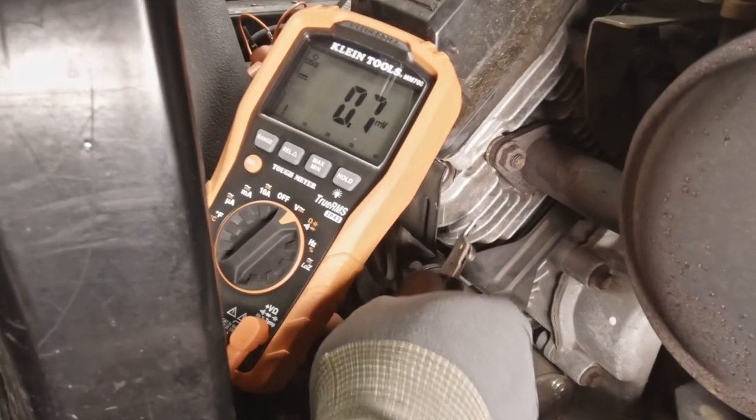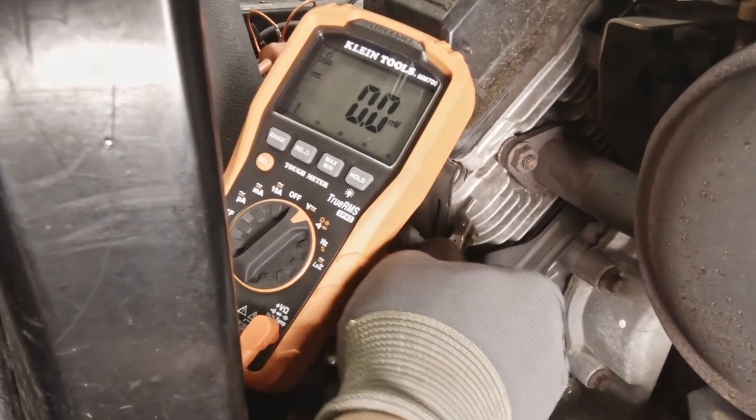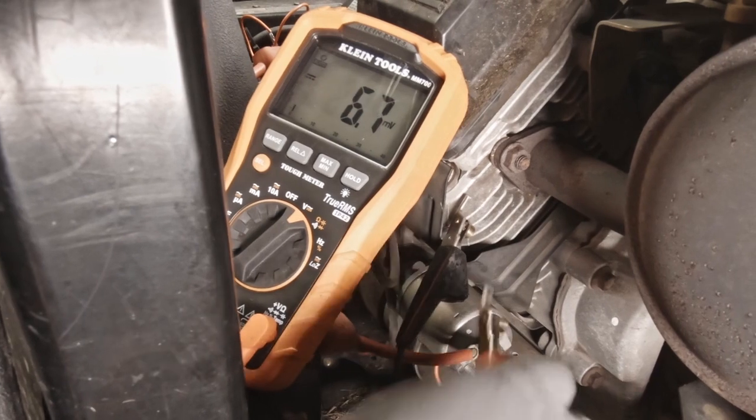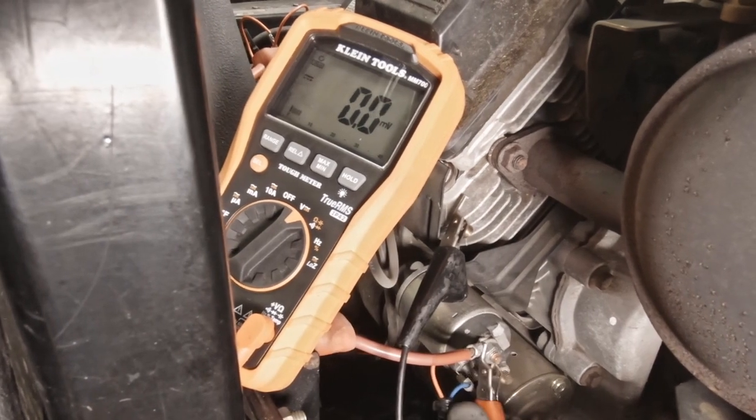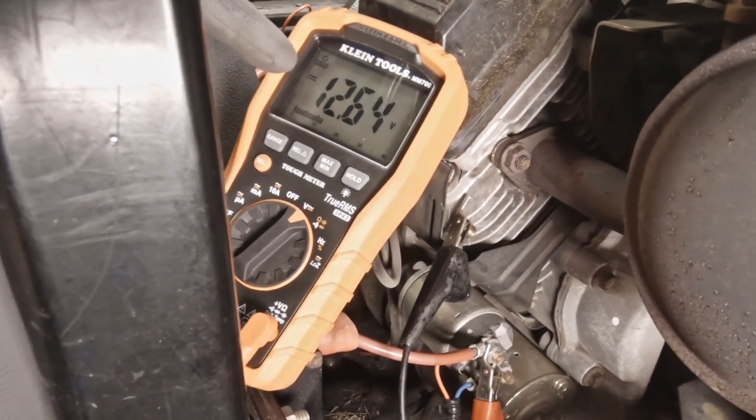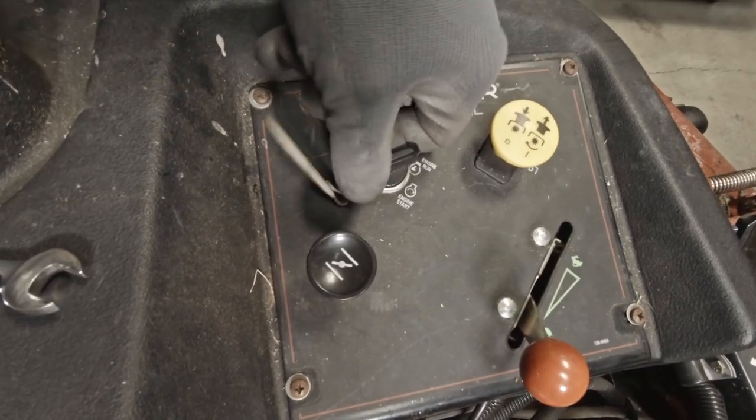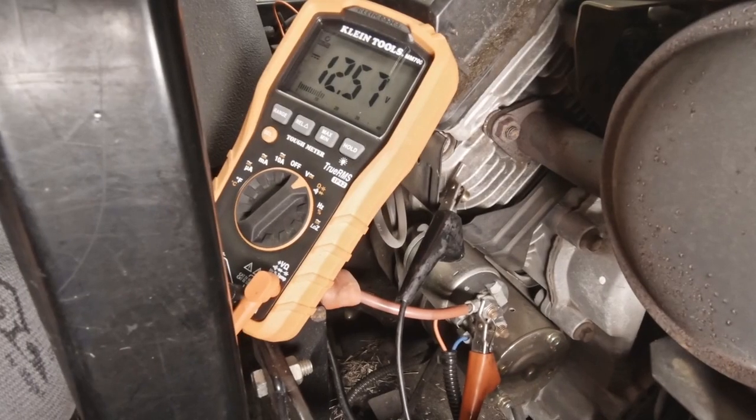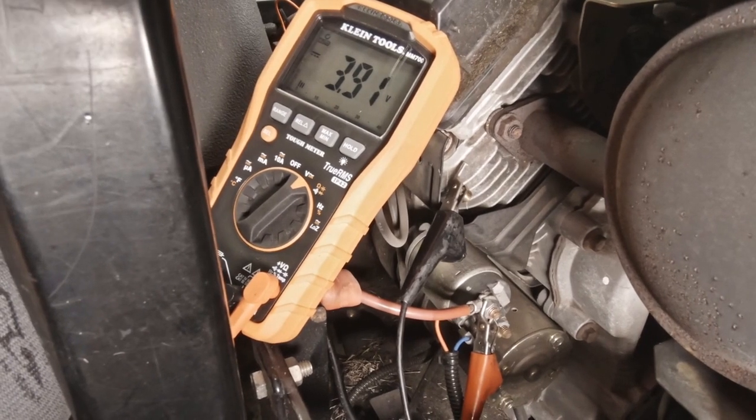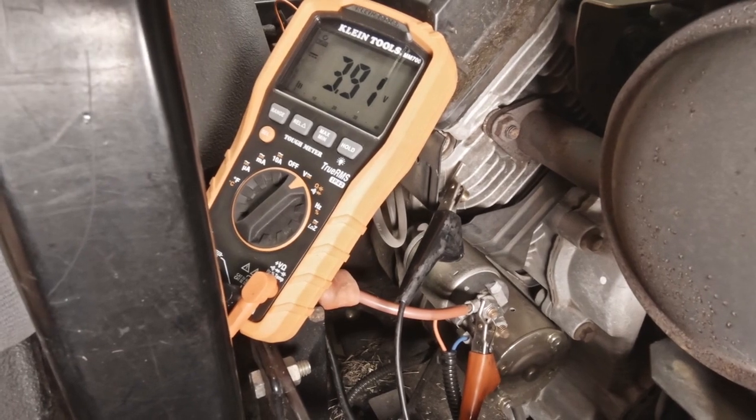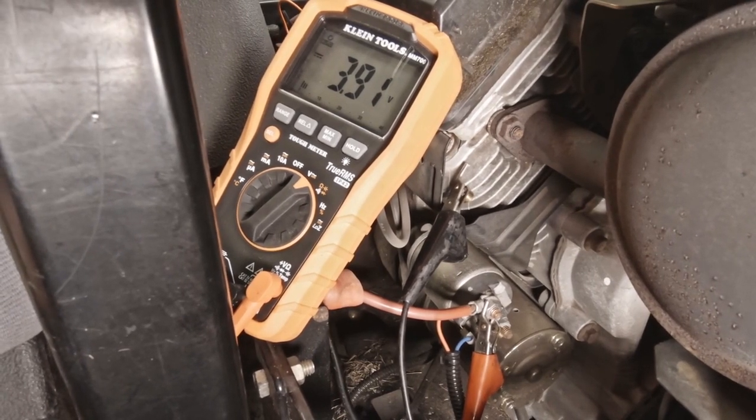Okay, now there's another easier way to do this. I'm just going to take my ground lead, put it on ground, and then our positive lead to the starter. Now we're reading our battery 12.6. We're going to start the system, and here we see 3.91 volts being delivered to the starter. That's why our starter is not starting.